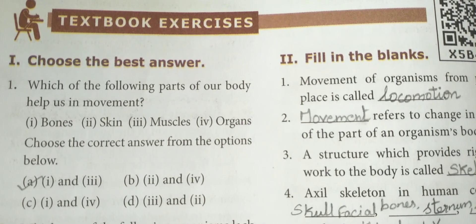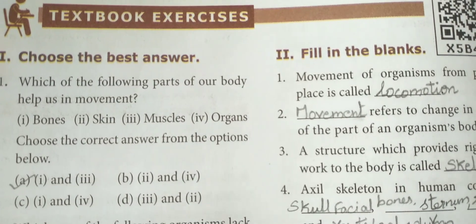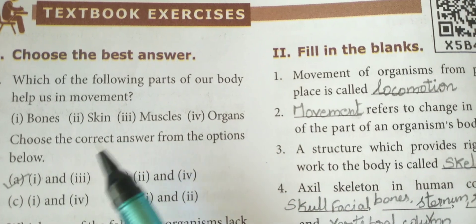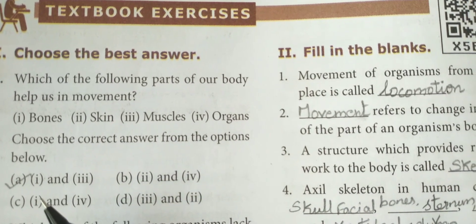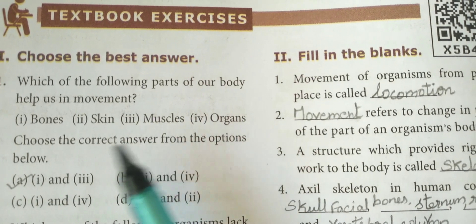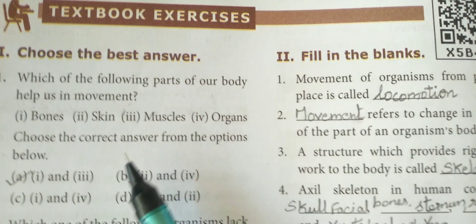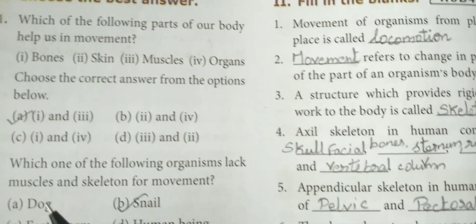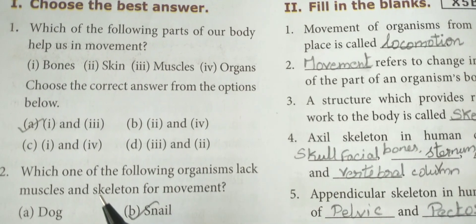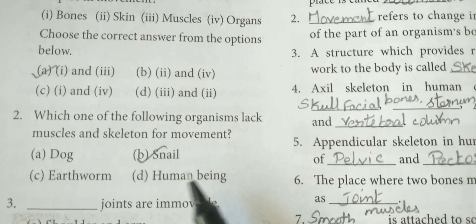Textbook Exercise, Roman numeral 1: Choose the best answer. Which of the following parts of our body helps us in movement? The answer is bones and muscles — these two parts help in movement. Next, which one of the following organisms lacks muscles and skeleton for movement? The answer is snail.